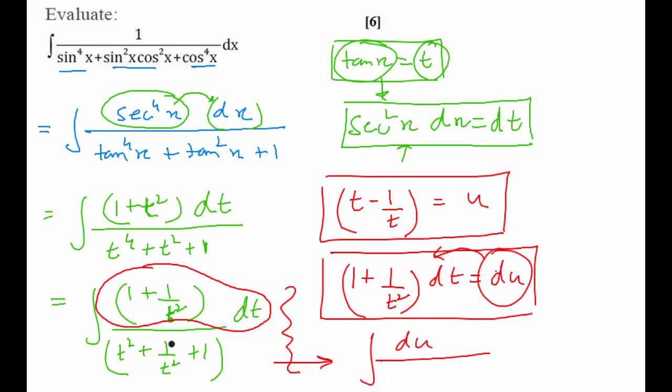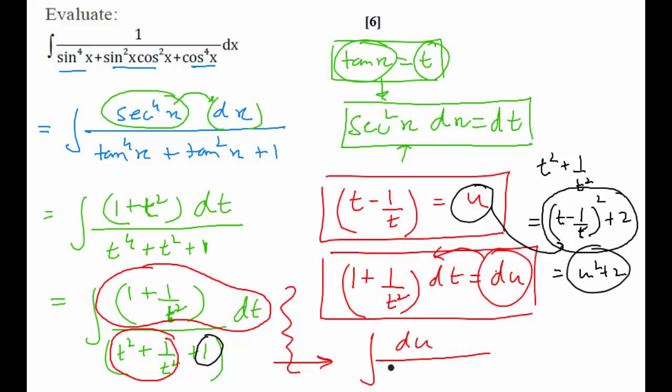And denominator, first of all, you need to see that t square plus 1 upon t square can be written as t minus 1 upon t whole square. But then we are getting minus 2 extra. So let us add 2 also. So this is the value of t square plus 1 upon t square. But t minus 1 by t is nothing but u. So basically in terms of u, t square plus 1 by t square is u square plus 2. But we also have 1 extra here. So overall your denominator looks like u square plus 3. Now this is a very easy integral.